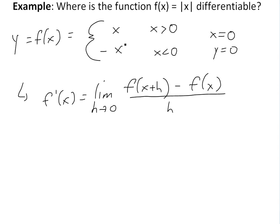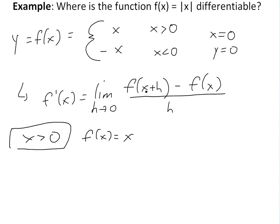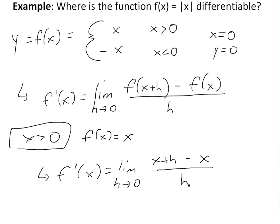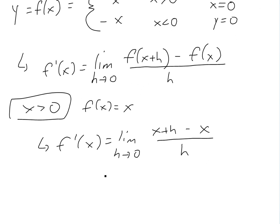To find the derivative when x is greater than zero, we look at f of x equals x. Plugging in x plus h, we get the limit as h approaches zero of (x plus h) minus x, all divided by h. The x's cancel, leaving us with h over h, which equals one. So our derivative is positive one when x is greater than zero.